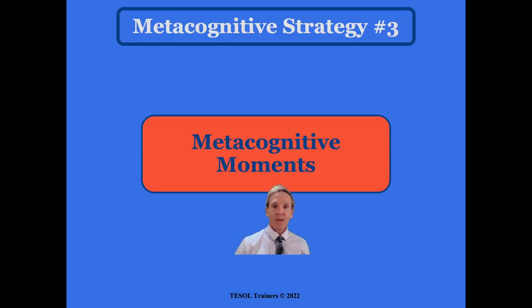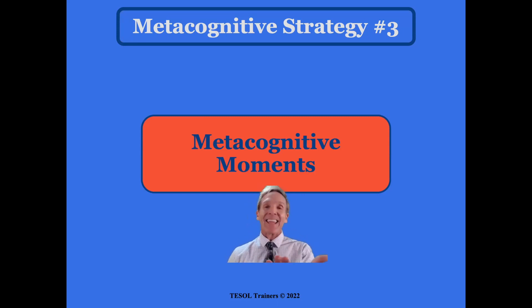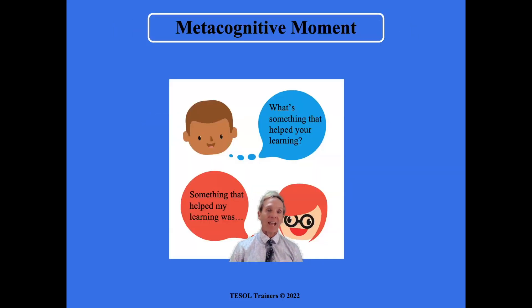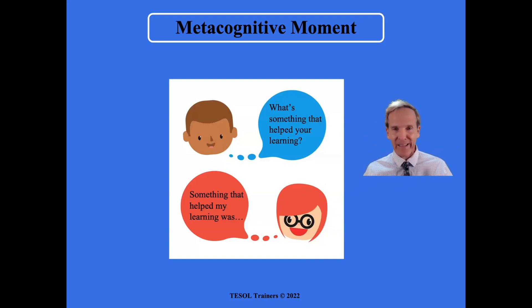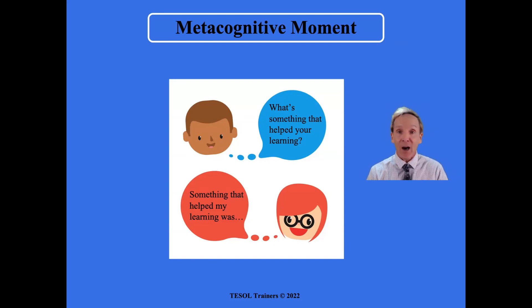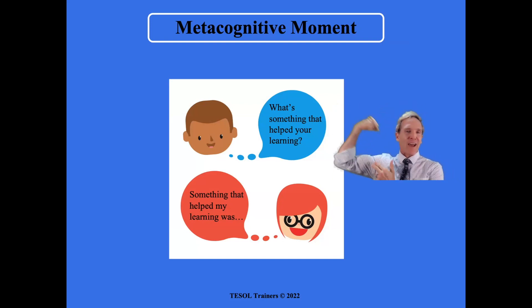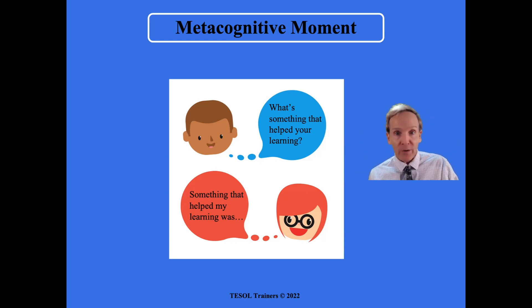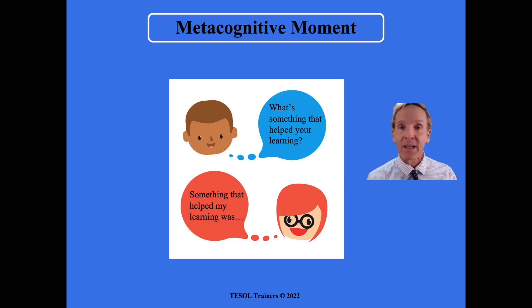The third strategy is what we call metacognitive moments. Again, it can be used in any context at any moment. At the end of a lesson, I want to ask my students: what's something that helped your learning? But if my students have never built that muscle, or none of their teachers before me have ever asked them what helped or hindered their learning, the chances are they're going to need to be scaffolded into being able to respond to this confidently and competently.